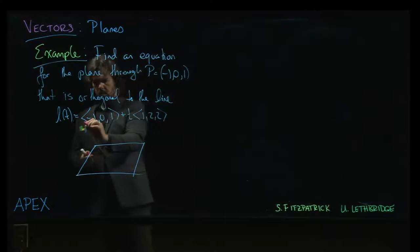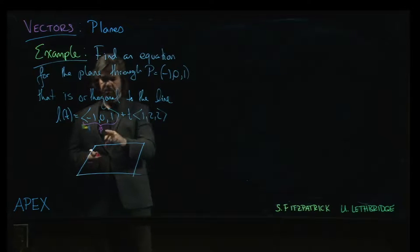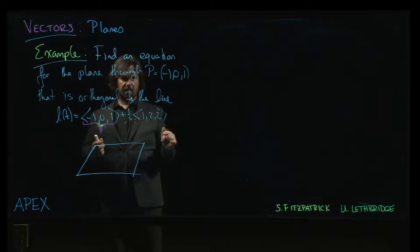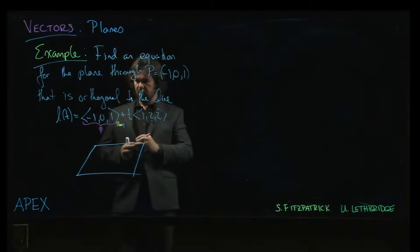So one of the things that we'll notice here, notice that this is the position vector for this same point. So the line that we have passes through that given point on the line.